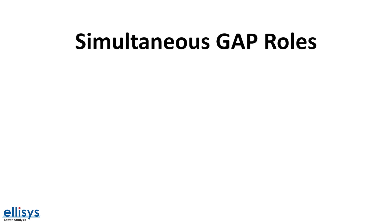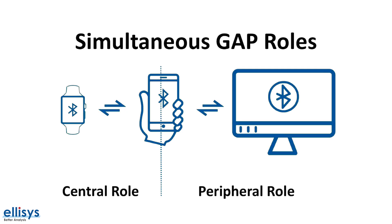A single device can play multiple roles at the same time. For example, your smartphone can be in the central role while communicating with your smartwatch, but it can also act in the peripheral role while communicating with a PC — and it can do all of this simultaneously.